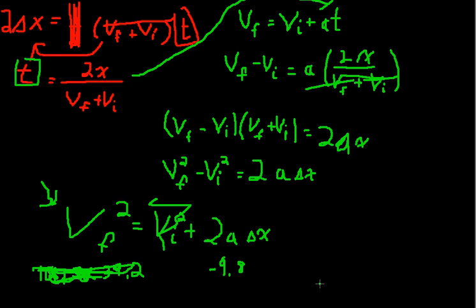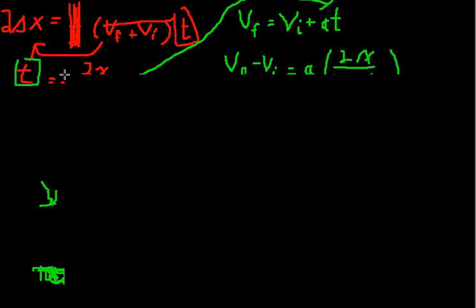So we've gone over the four kinematics equations, and basically, given any three variables, you can find the other two. So if you have initial velocity, and final velocity, and acceleration, you can find the time and the distance traveled. All that good shit. I'm just gonna kinda end it there.